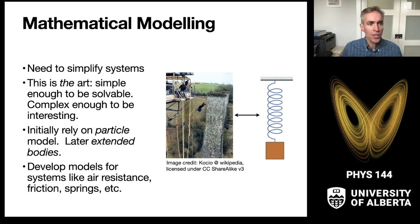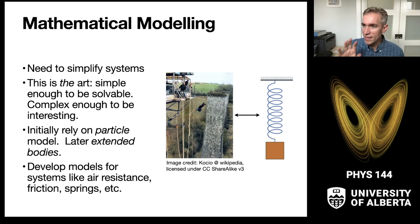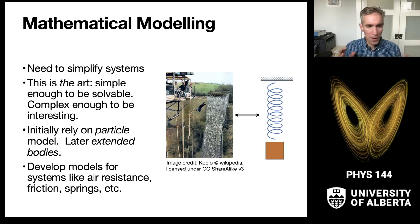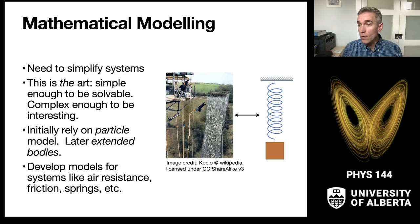We have to engage in simplifying a system enough that you can solve it, but it leads to something that is complex enough to be interesting and actually represent the key parts of the physics. So we're going to start off by relying on what we call a particle model, where we treat masses as having zero dimensions — no length, width, or height — and then explore their interactions. Later on we'll move on to extended bodies.